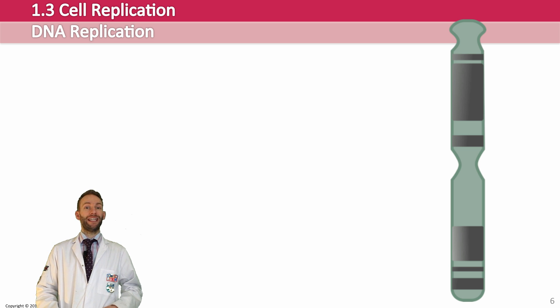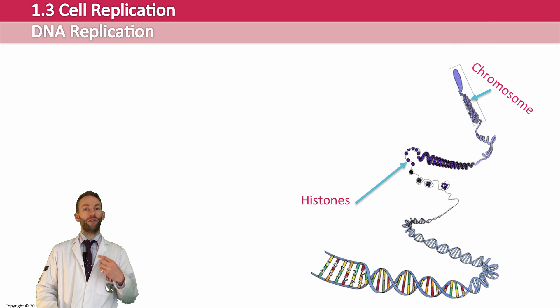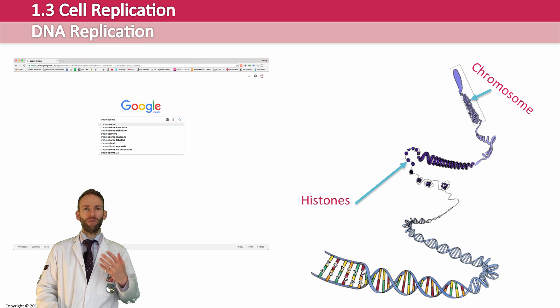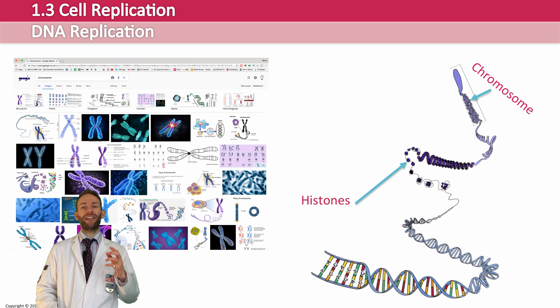To form a chromosome, the DNA molecule winds around proteins called histones to form nucleosomes. Then they super coil to form this dense chromosome structure. Now, most people get this bit wrong. If you Google chromosome, you'll find lots and lots of pictures of this typical sort of X shape. But actually, what you're looking at there when you see that sort of X shape isn't a single chromosome.